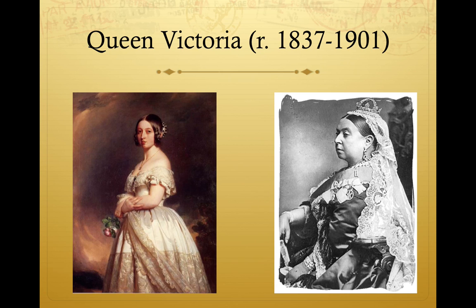Today we're going to talk about Victorian England, and this lecture will be in three parts. The first part will be a general overview of Victorian England. The second part will be a discussion of Oscar Wilde and aestheticism — even though we're not reading The Importance of Being Earnest, touching on Wilde's contribution to our march of isms this semester is important. The third part will be about George Bernard Shaw and socialism.